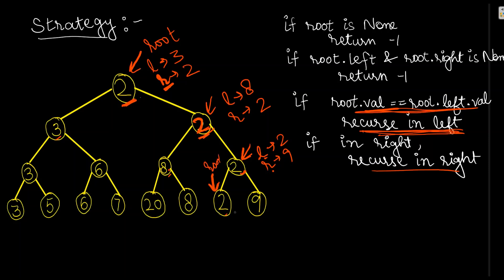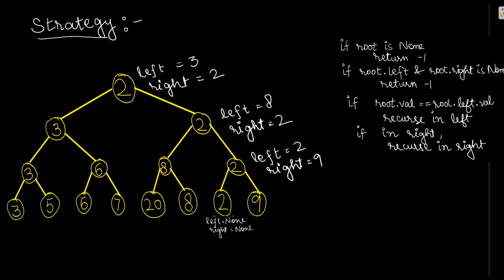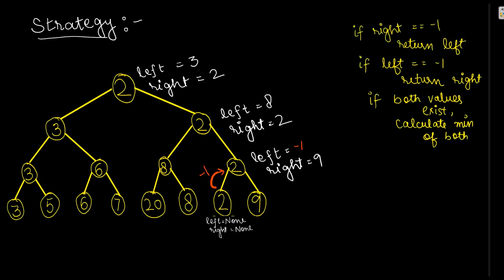At this point root is two, and checking its left and right - there are no children, so I write None. Now the cursor is at the bottom of the recursion. Since left and right are both None, it returns minus one. The cursor moves back up: for this node with root two, left is updated to minus one and right remains as nine.